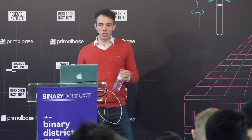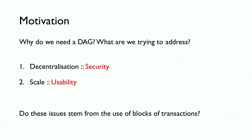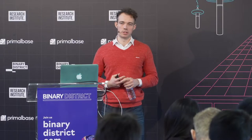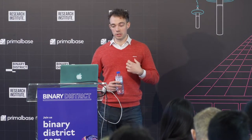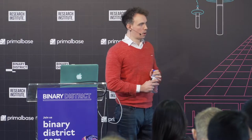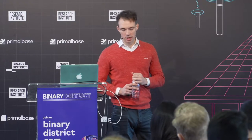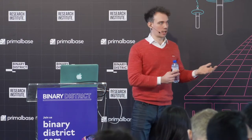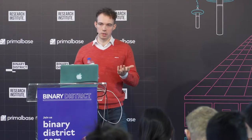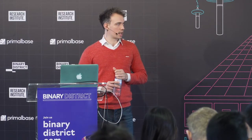Motivation: why do we need a DAG, and what are we trying to address? The major things we're trying to address are decentralization and scale. There are a lot of issues with blockchain technology. The two that interest me most are the decentralization issue, which really boils down to security, and the scalability issue, which is kind of usability. We had an example of streaming music, and yeah, scale is still not there.